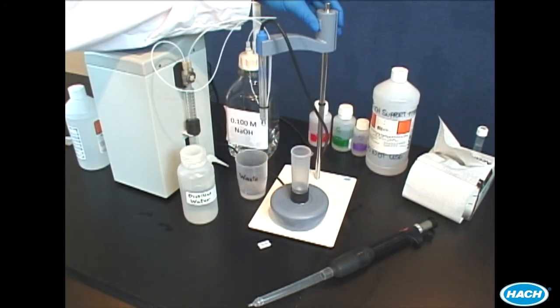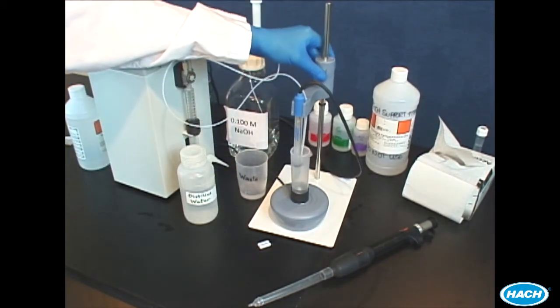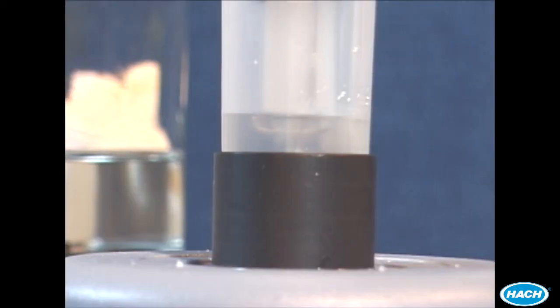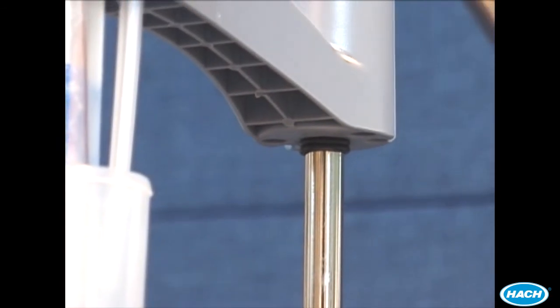Lower the electrode into the titration cell. Make sure the entire pH bulb is immersed into the sample and not hitting the stir bar. When you have determined the proper depth of immersion, you can adjust the O-ring on the stir stand to help quickly locate the proper depth.